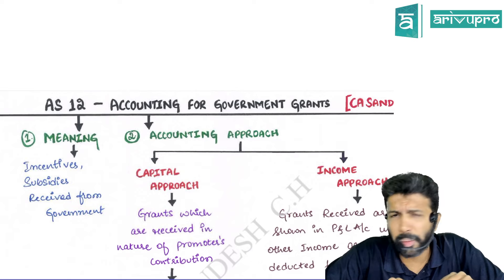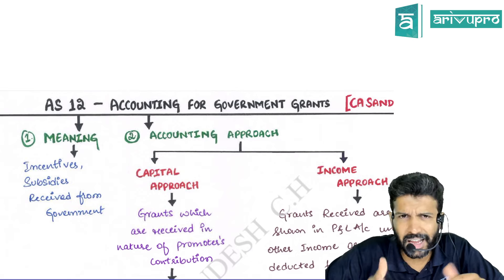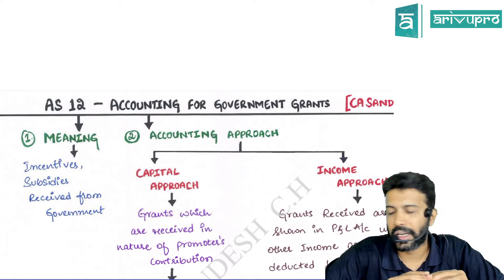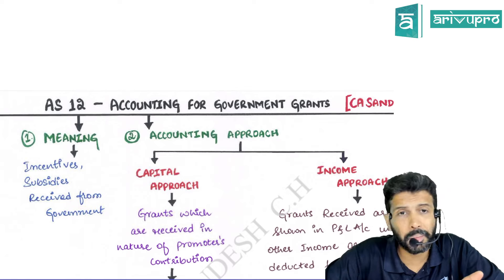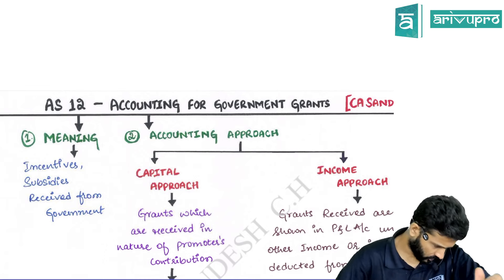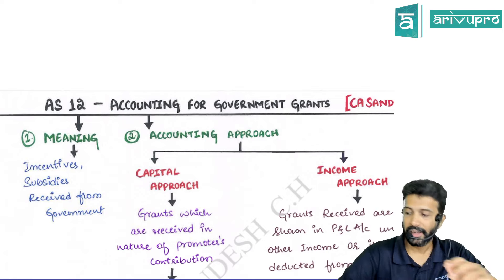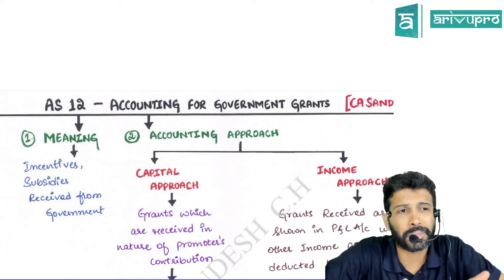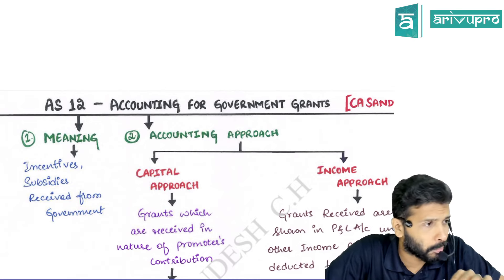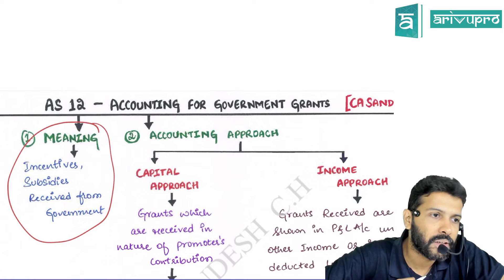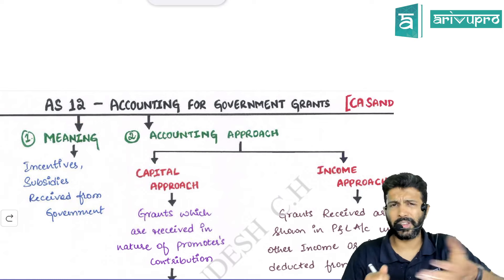Normally you receive from the government or you pay the government — we pay tax to the government. But the government will also pay us something sometimes. Like during COVID times, almost every central and state government gave some relief packages. So governments will have various schemes, and if you fall under a particular scheme, you may get some subsidies or incentives.